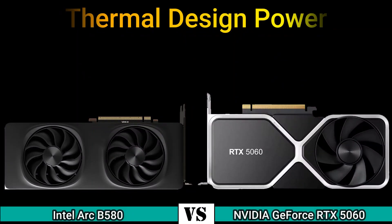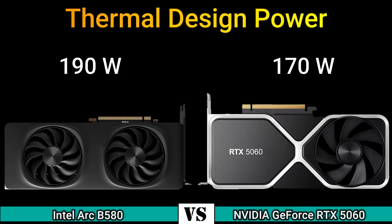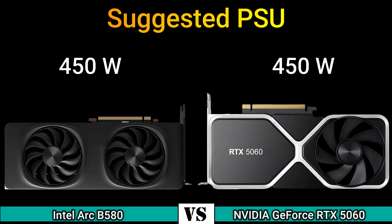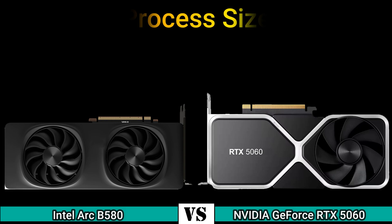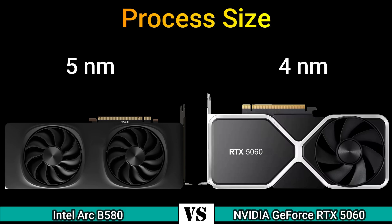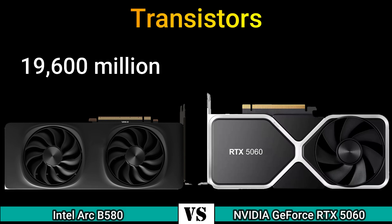Next, general information: thermal design power 190W and 170W. Suggested PSU 450W. Process size 5nm and 4nm. Transistors: 19,600 million density.